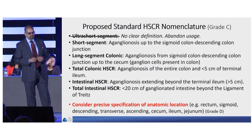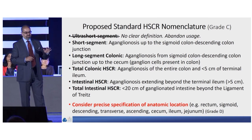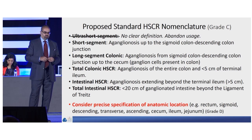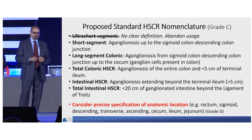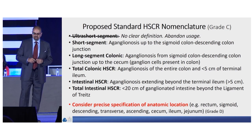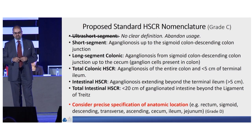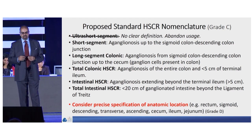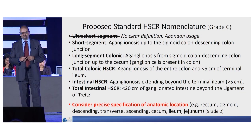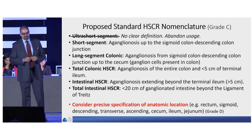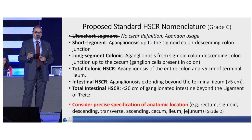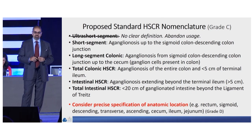We propose, as a Grade C recommendation, two options. First, we abandon ultra-short segment as a term because there's no clear definition. Short segment should be aganglionosis up to the sigmoid colon-descending colon junction. Long-segment colonic is aganglionosis from the sigmoid colon-descending colon junction up to the cecum with ganglion cells present in the colon. Total colonic is aganglionosis of the entire colon and less than 5 centimeters of the terminal ileum. Intestinal extends into the terminal ileum more than 5 centimeters. Total intestinal is less than 20 centimeters of ganglion in the intestine. However, based on our committee's review and consultation with the Hirschsprung disease interest group, we think we should move towards precise specification of anatomic location.